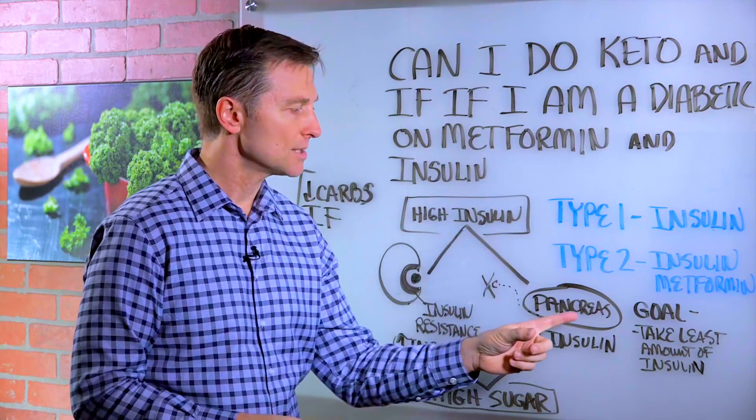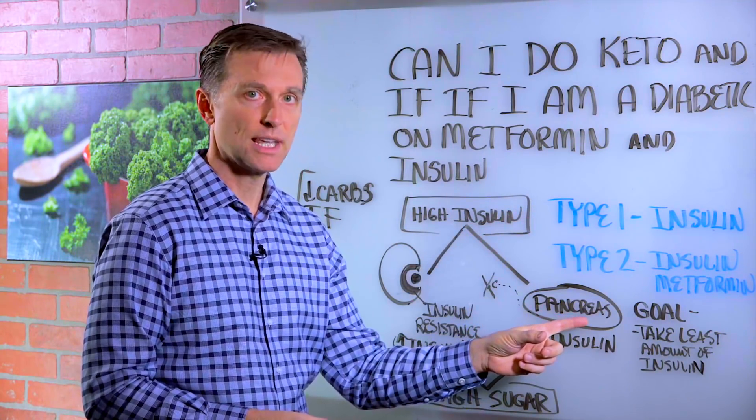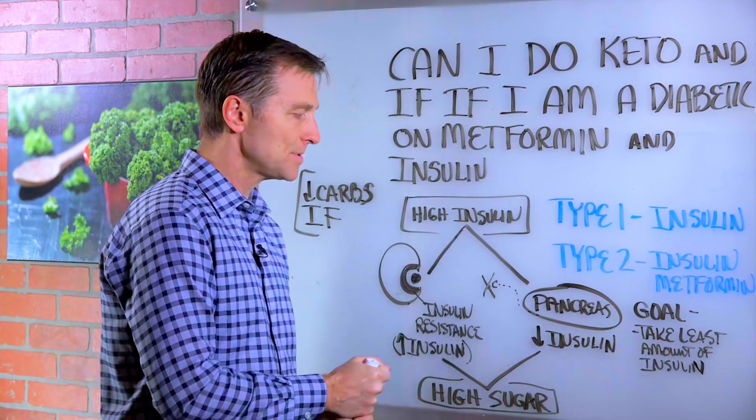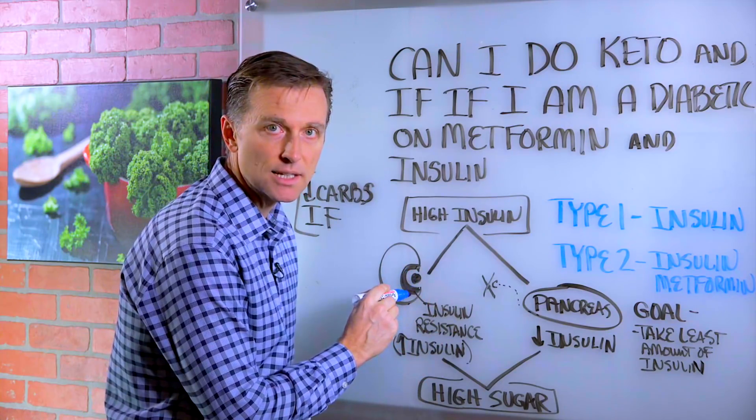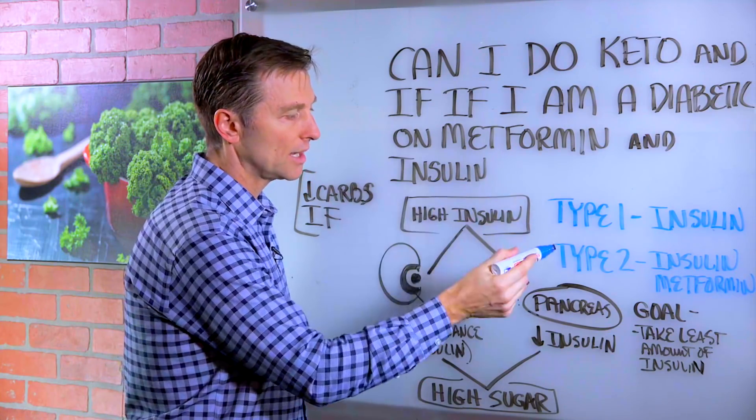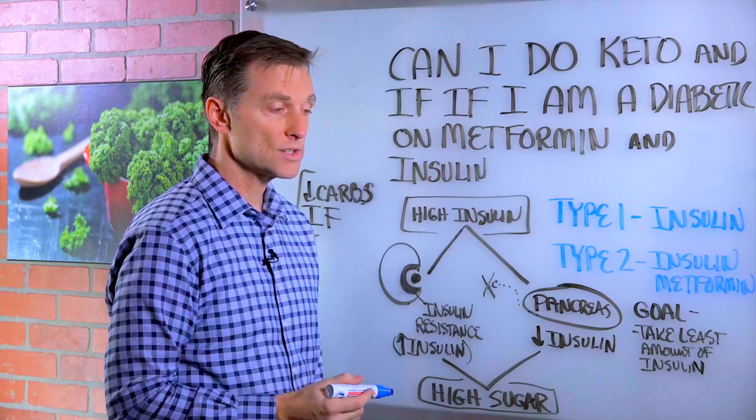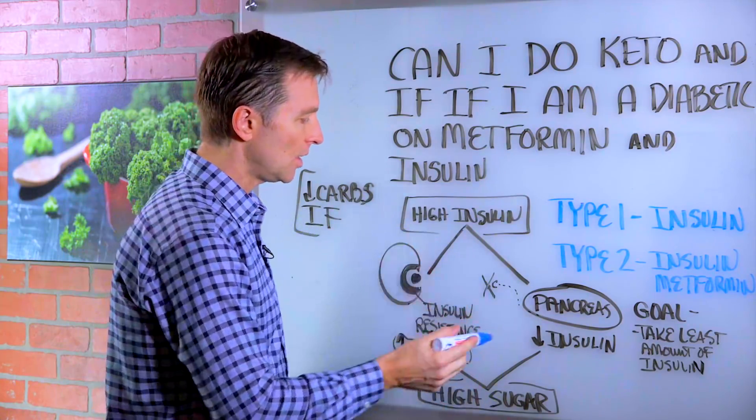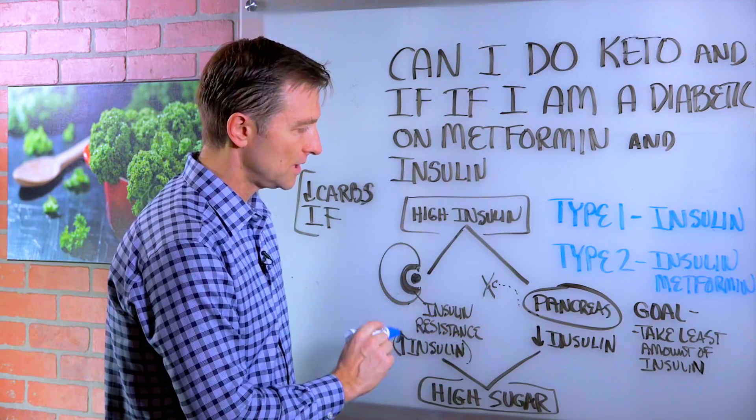Type 1 is a problem with the pancreas not producing insulin. Type 2 is more of a problem with the receptor end not receiving insulin, and the feedback goes back and causes the pancreas to produce more insulin to compensate. So it's a compensatory adaptation, and you have higher amounts of insulin.